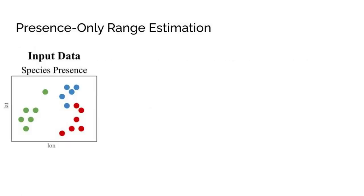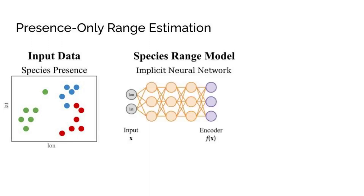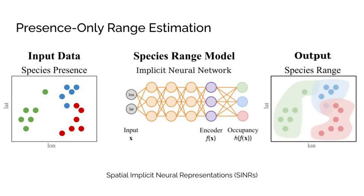Our pipeline starts with presence-only species observation data. Given a location, we pass the coordinates through a neural network that produces a feature vector representing the location. That feature vector is fed into a classifier that predicts species presence and absence. By sweeping over longitude and latitude, we can use this network to generate species range maps. This is a spatial implicit neural representation for the species ranges.